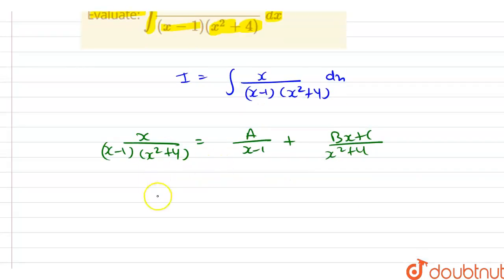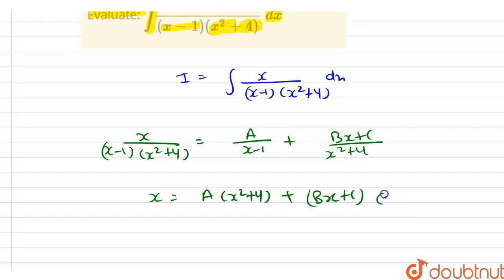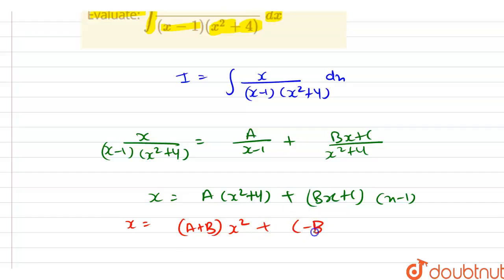Multiplying through, x equals A(x squared plus 4) plus (Bx plus C)(x minus 1). Expanding and grouping: x equals (A plus B)x squared plus (C minus B)x plus (4A minus C).